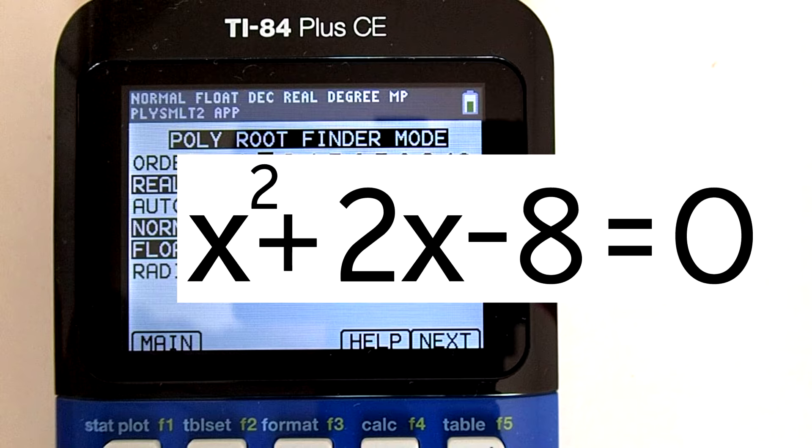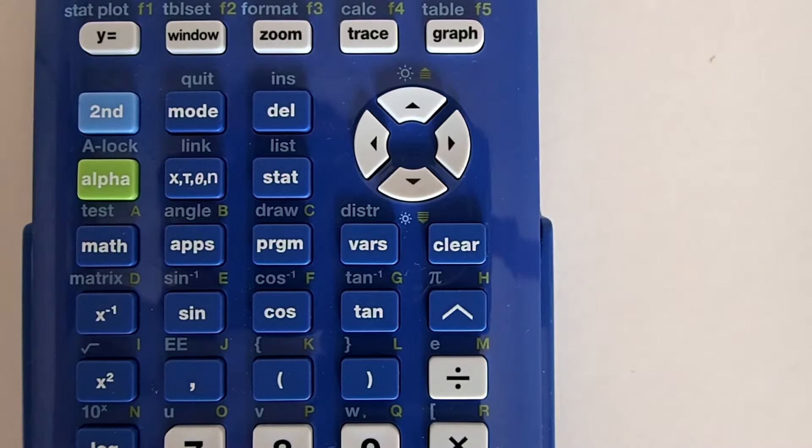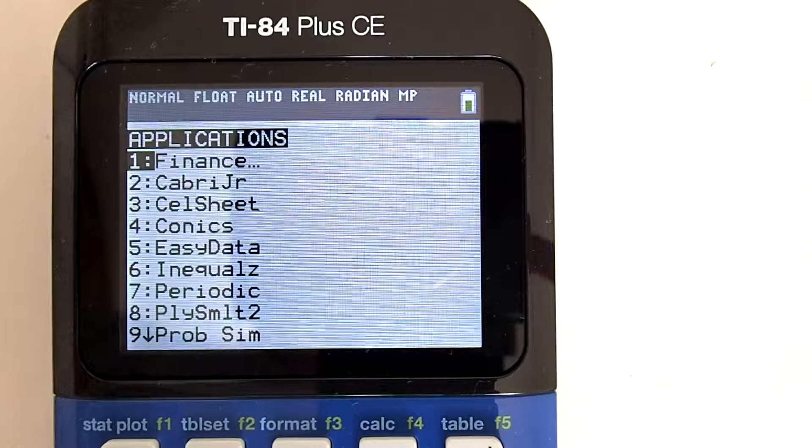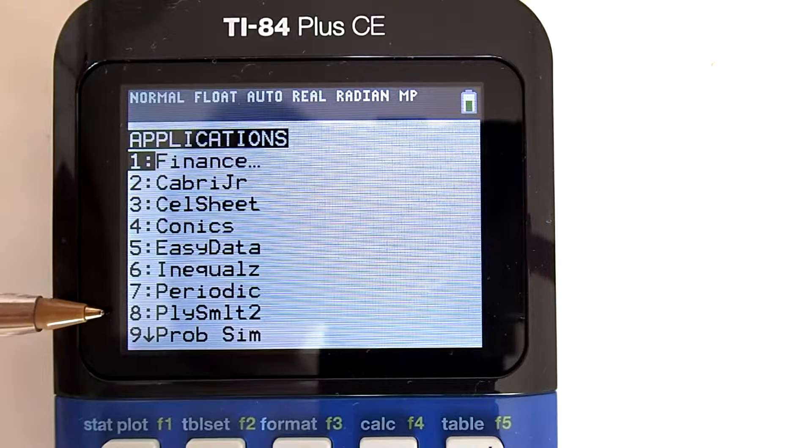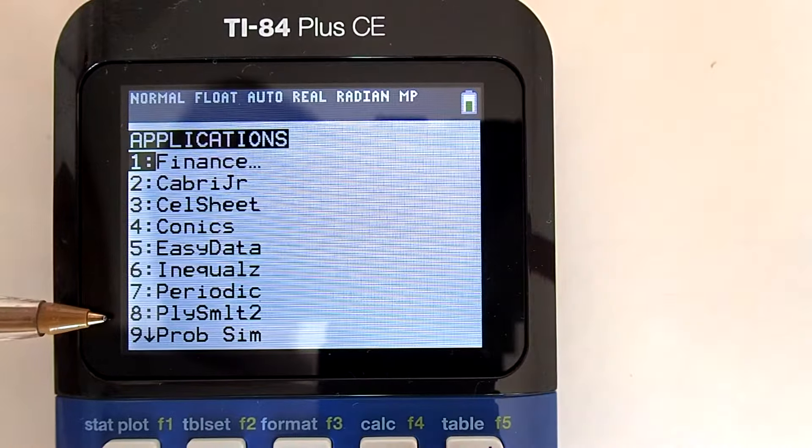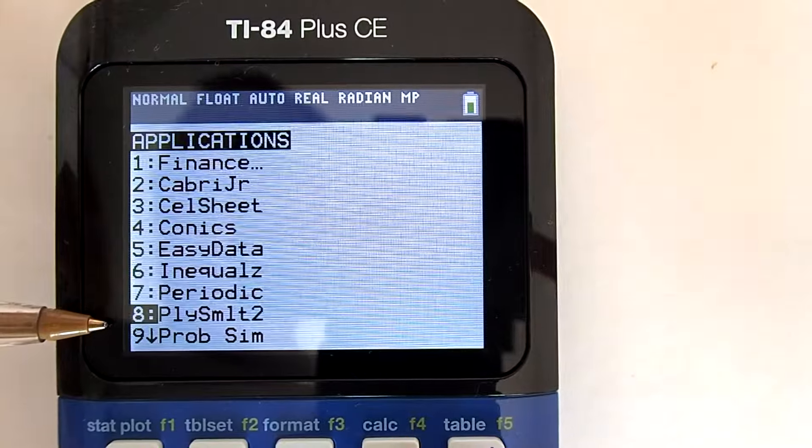Let's solve the following quadratic equation: x squared plus 2x minus 8 equals 0. Press the Apps key here. We want to use the Polynomial Root Finder located at number 8. Go down to number 8 here, press Enter.